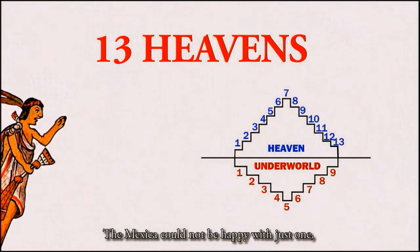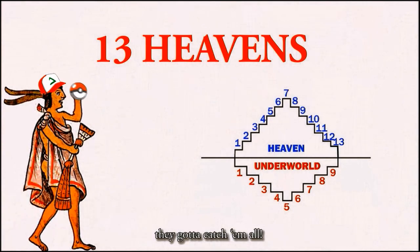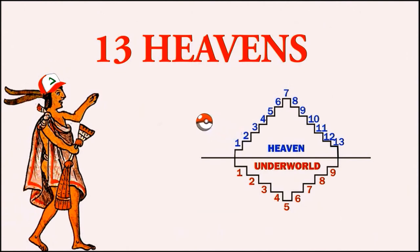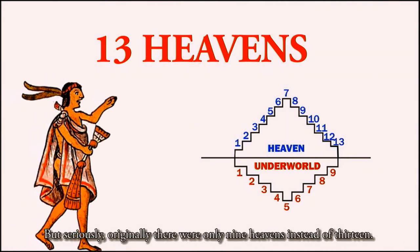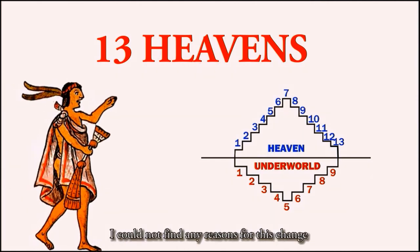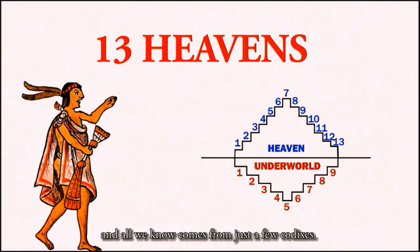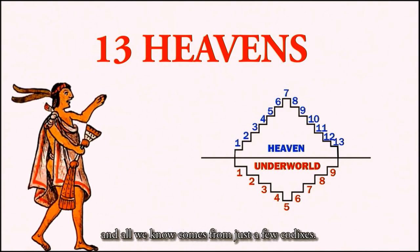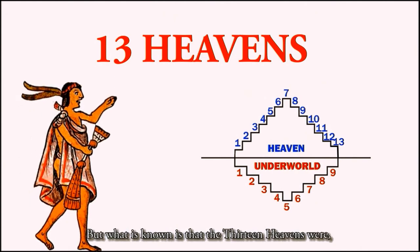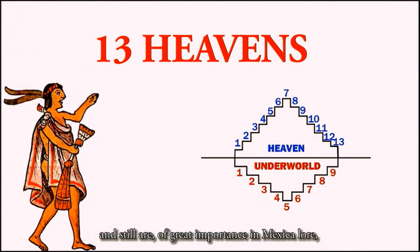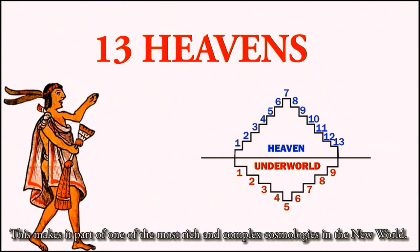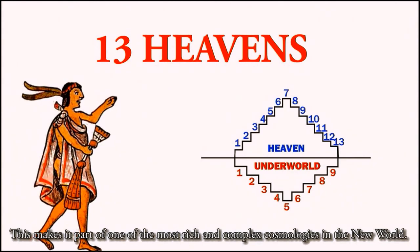And there you have them — the thirteen heavens. Originally there were only nine heavens instead of thirteen, which would have balanced the nine underworld regions, but I could not find any reasons for this change. A lot of information is missing, and all we know comes from just a few codexes. What is known is that all the thirteen heavens were, and still are, of great importance in Mexica lore, as each had its own ruler and unique purpose, making it part of one of the most rich and complex cosmologies in the new world.